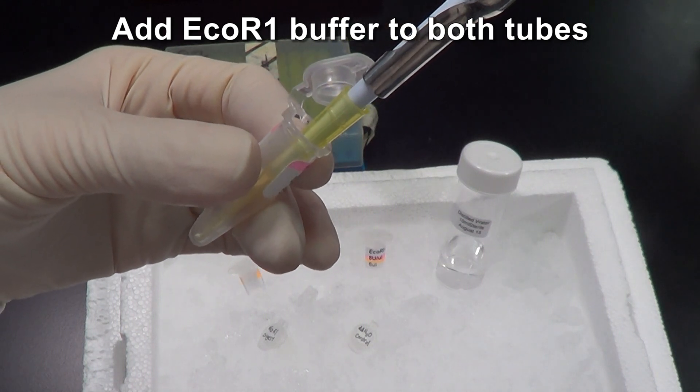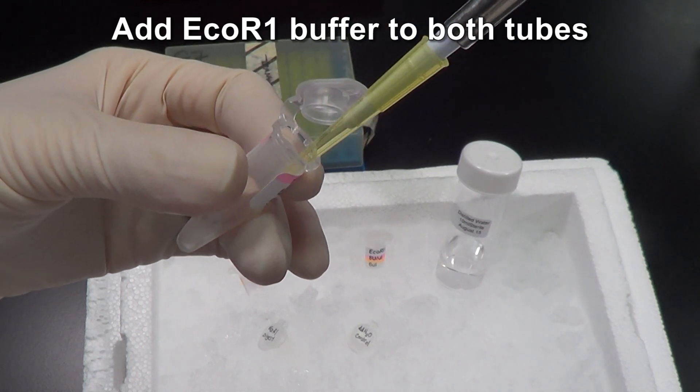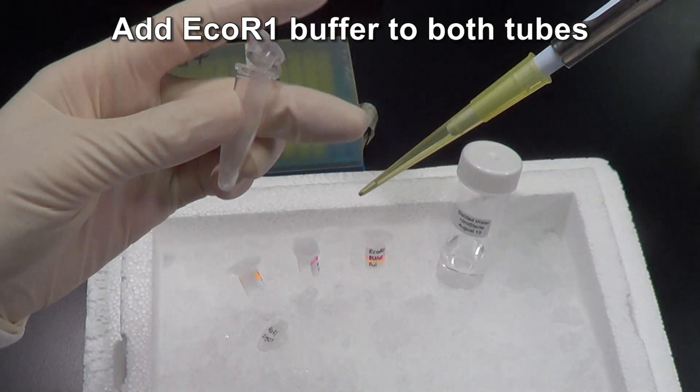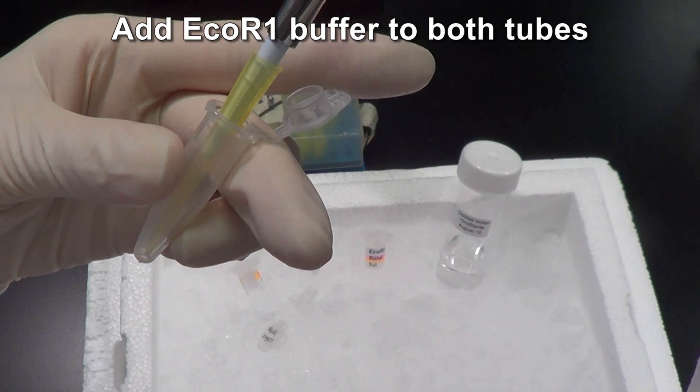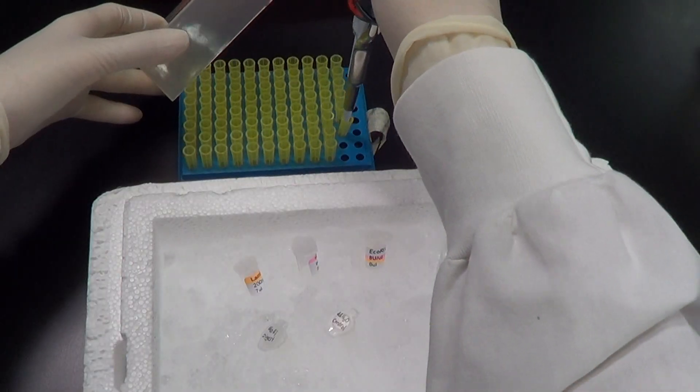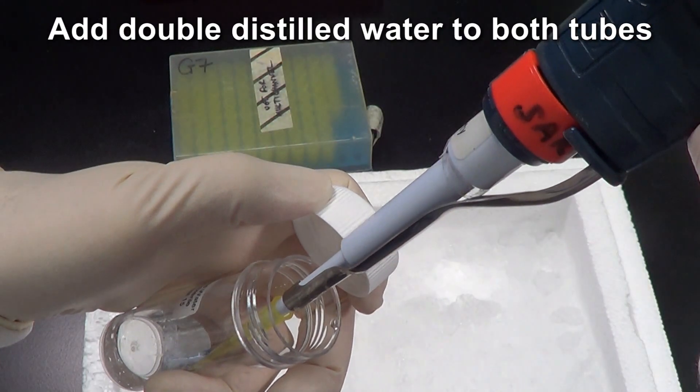When pipetting small volumes, hold the microcentrifuge tube at eye level to ensure you're pipetting the correct volume. Add double distilled water to both tubes.